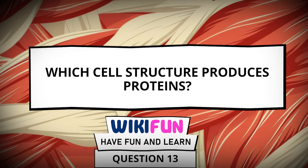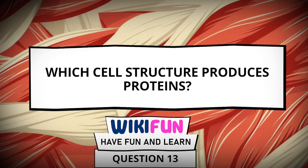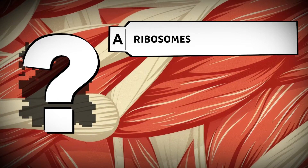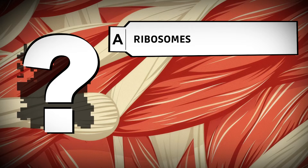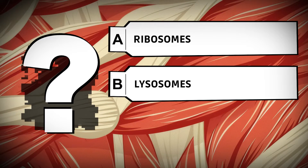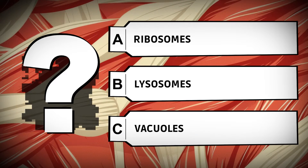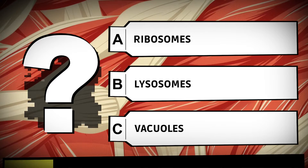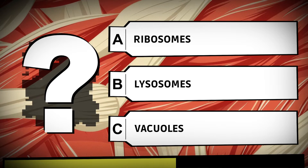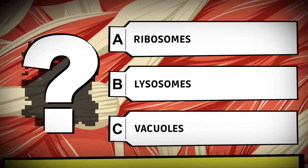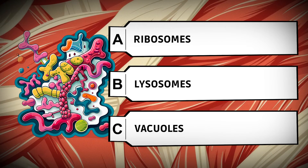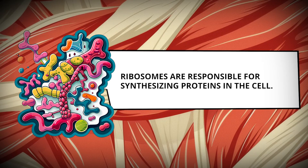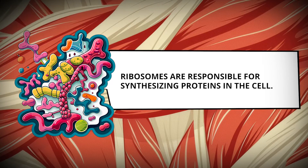Which cell structure produces proteins? Ribosomes. Lysosomes. Vacuoles. Ribosomes are responsible for synthesizing proteins in the cells.